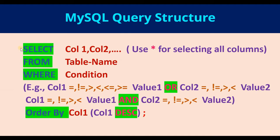The minimum statements required for creating an SQL query are SELECT and FROM. We could say SELECT asterisk, which means select all the columns, FROM followed by a table name, and end the query with a semicolon. This would select all the columns and all the rows from that particular table.